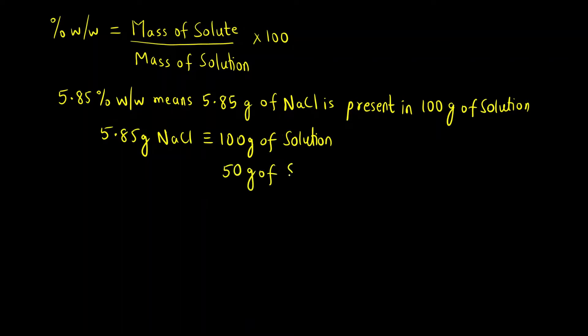But it is given in the question that 50 grams of solution is present, so we have to first calculate the mass of NaCl. Let's say mass of NaCl in 50 grams of solution is x. We do cross multiplication.